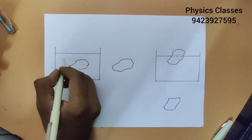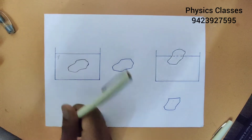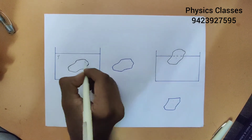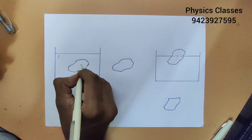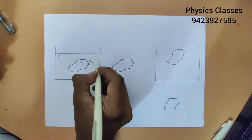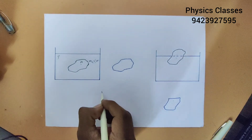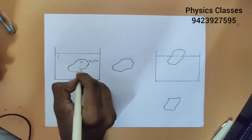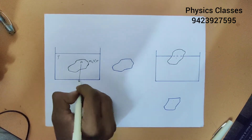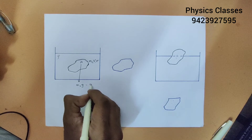Consider a liquid kept in a container. Let rho be its density. Now imagine a solid immersed in this liquid. Let A be its center of mass. Let M₀ be its mass, let V be its volume, and let sigma be its density. The gravitational force acting on the solid can be shown from its center of mass in the downward direction. It will be equal to M₀ times G, which is also equal to sigma times V times G.